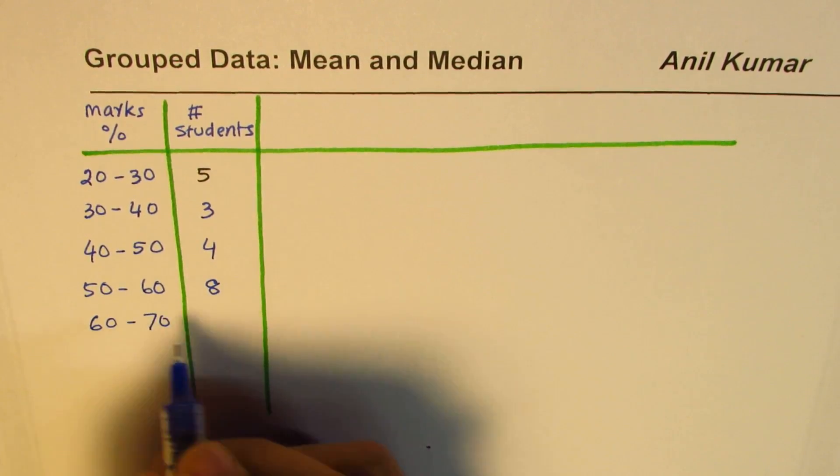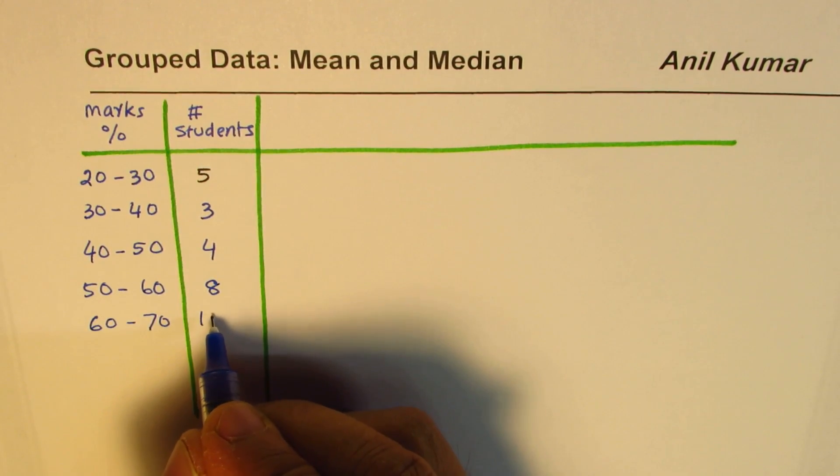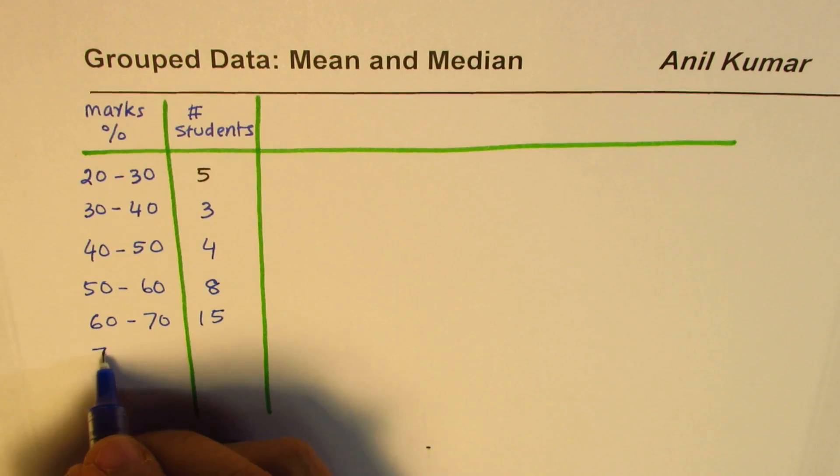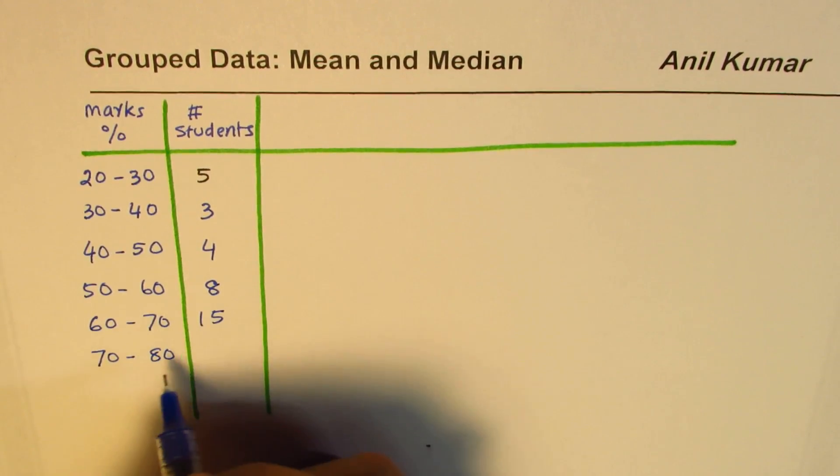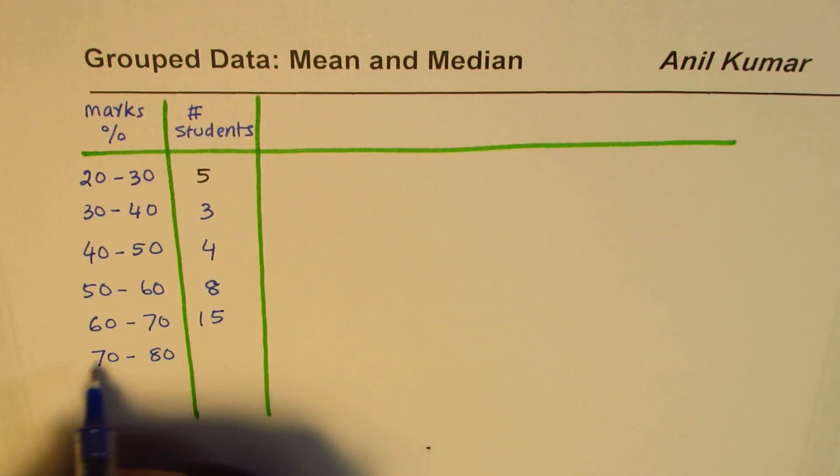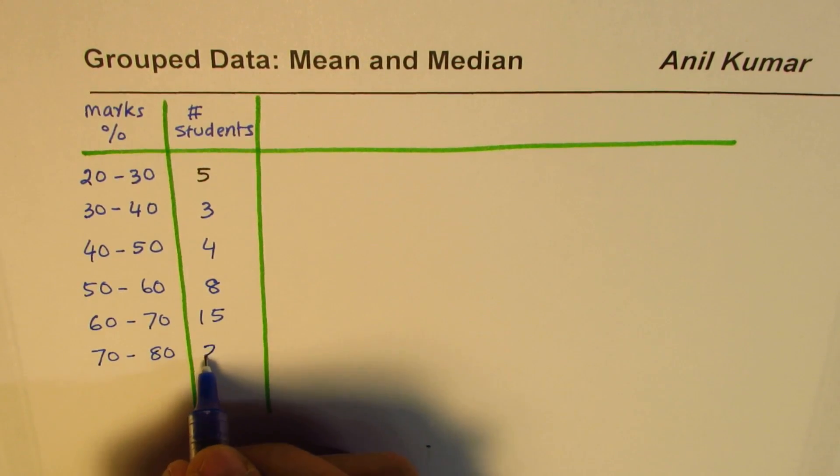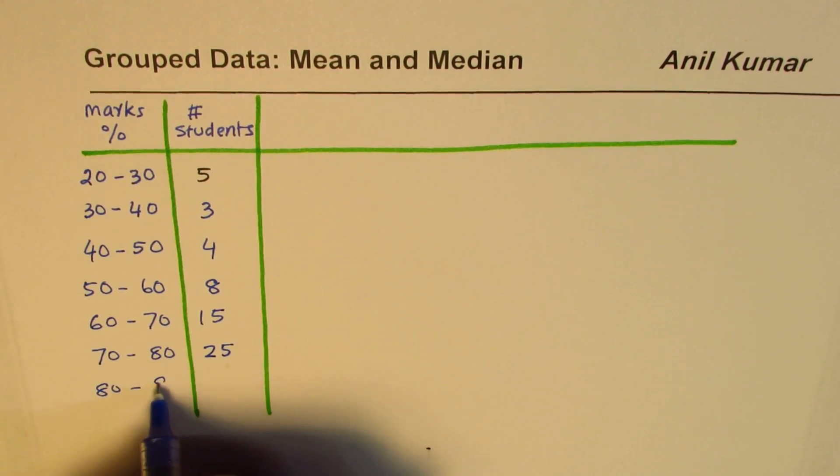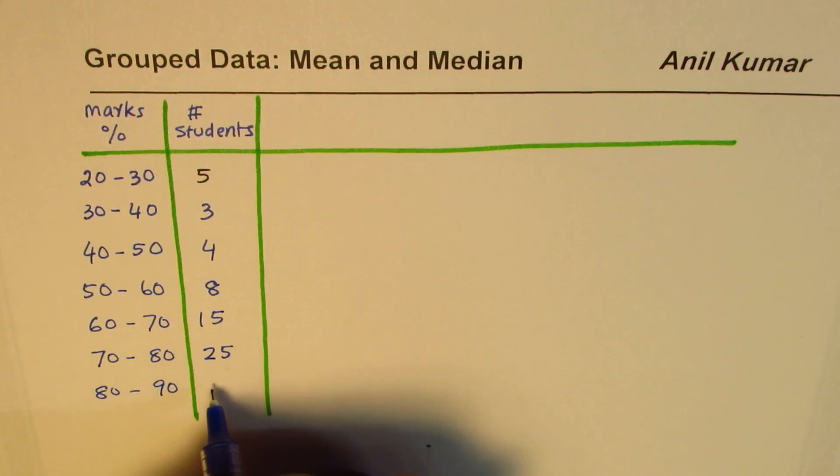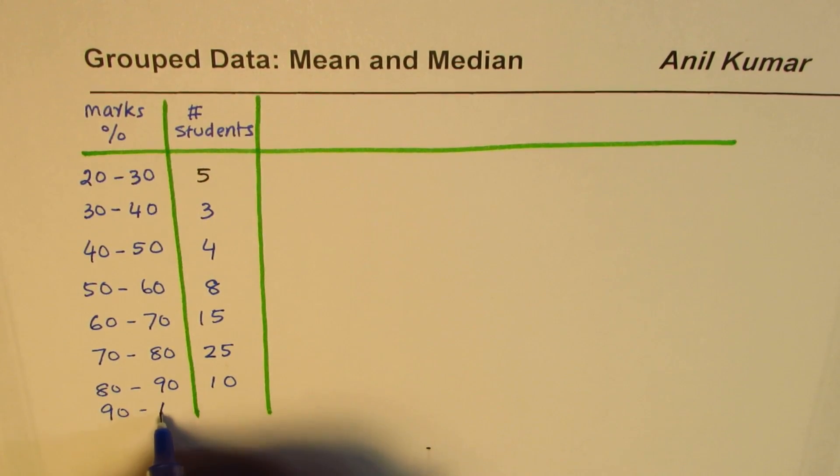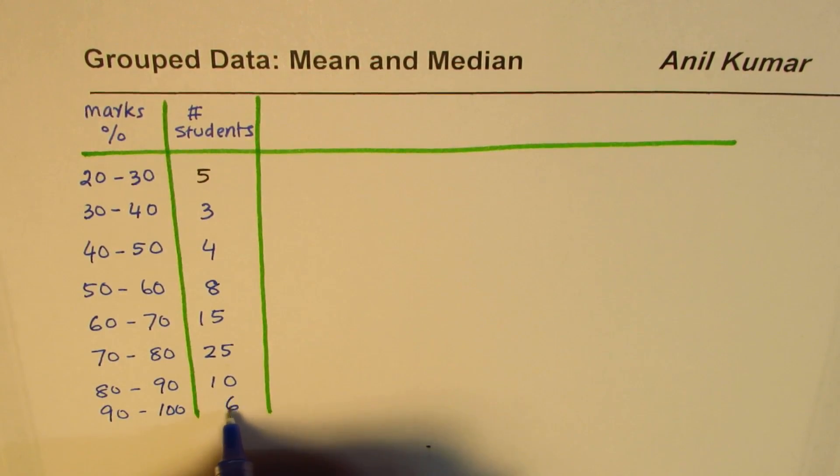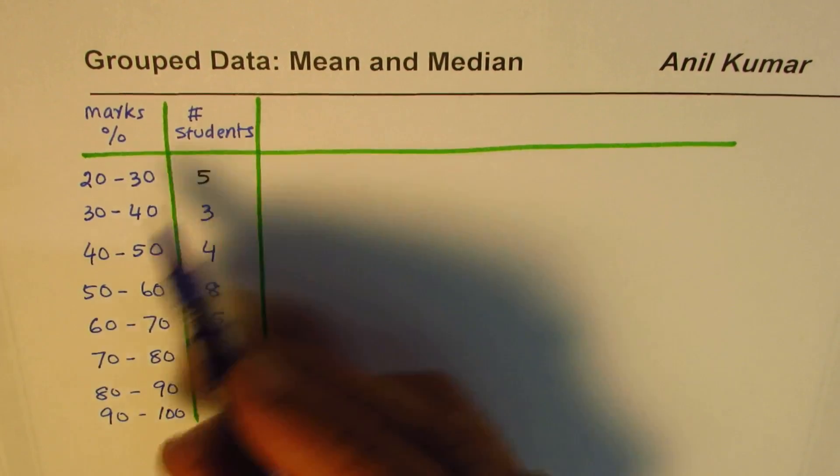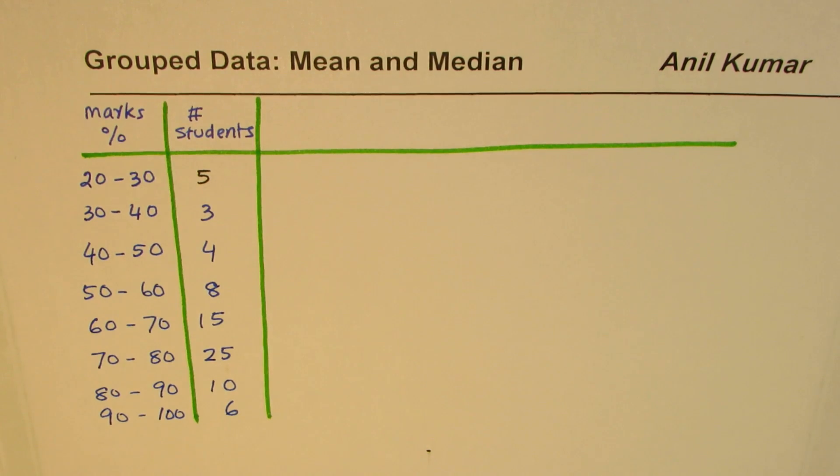From 60 to 70, the students were 15. From 70 to 80, the number of students who scored marks within this range is about 25. From 80 to 90 the number was 10, and from 90 to 100 there were six students. This is the distribution for students scoring marks in mathematics.